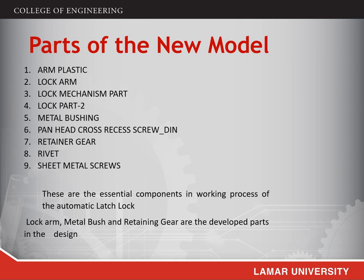My friend Ashok is going to talk about the model and its parts. The parts of the new model contain the arm plastic, lock arm, lock mechanism part, lock part 2, metal bushing, pan head cross screw, retainer gear, rivet, and sheet metal screws. These are the essential components of the working process of the automatic latch lock. The lock arm, metal bush, and retaining gear are the key development parts in the design.